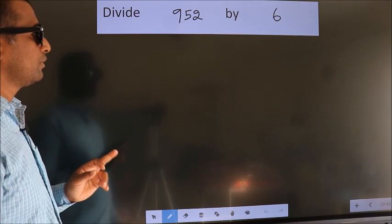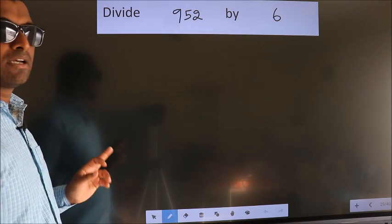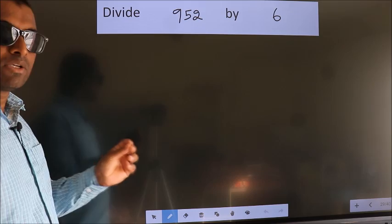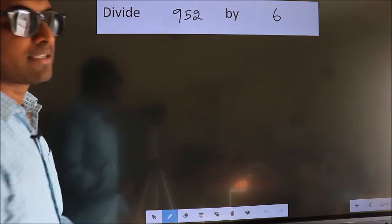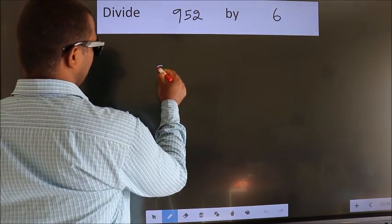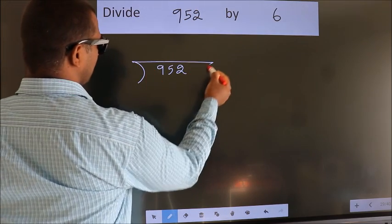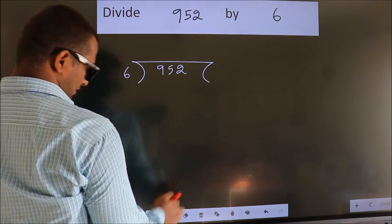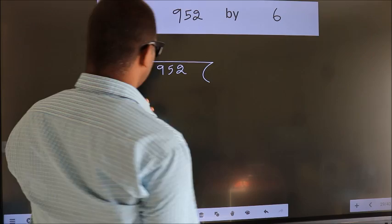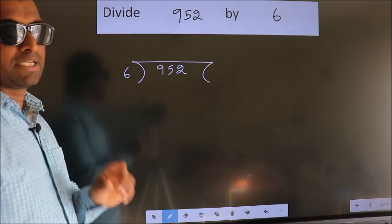Divide 952 by 6. To do this division, we should frame it in this way. 952 here, 6 here. This is your step 1.